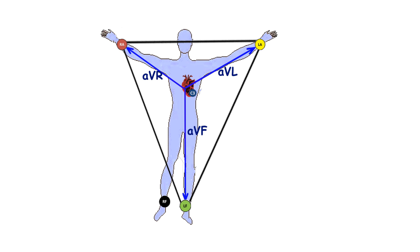Lead AVL has a positive pole on the left arm and a negative pole that includes a combination of the poles on the right arm and the left leg. Lead AVF has a positive pole on the left leg and a negative pole that includes combination of the poles on the right arm and the left arm.